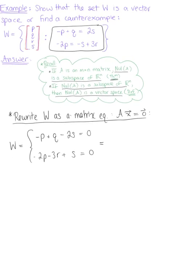If we actually rewrite this being super careful, we say -P + Q + 0R - 2S = 0, and then we have -2P + 0Q - 3R + S = 0. You don't have to do that, but this can be helpful when we convert this to its equivalent matrix equation form.